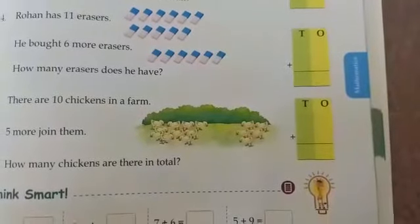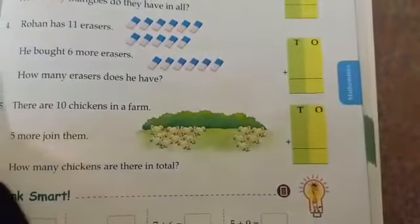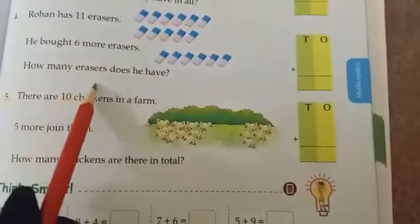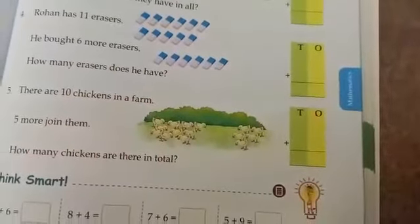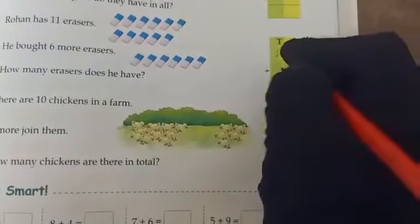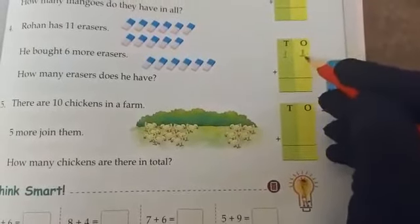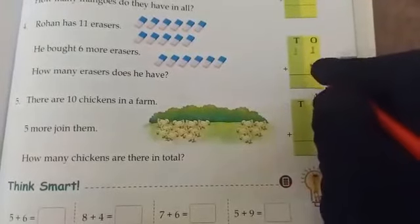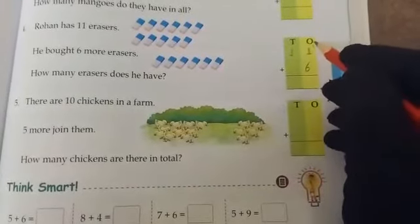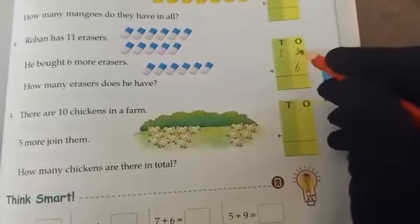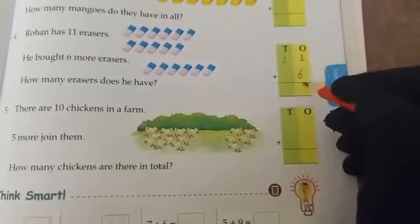So do the remaining same. Now we will solve word problem. Look here. Rohan has 11 erasers. He brought 6 more erasers. How many erasers does he have? How many erasers Rohan brought? He has 11. So 2 digit numbers. So I should write in 1 in 10s place and another 1 in 1s place. Don't write 11 in 1s place. You should write like this. You have to spread like this. Now he brought 6 more erasers. So write 6 in 1s place. Not in 10s place. I told before only always start to write numbers from the 1s place.